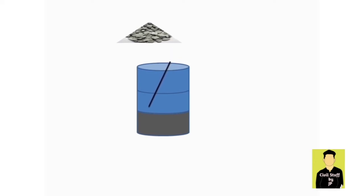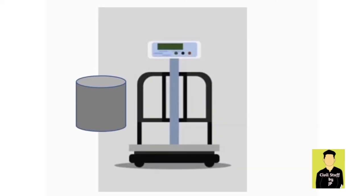Fill the sample in cylindrical measure in 3 layers, tamping each layer 25 times. Take the weight of measure, say W1.